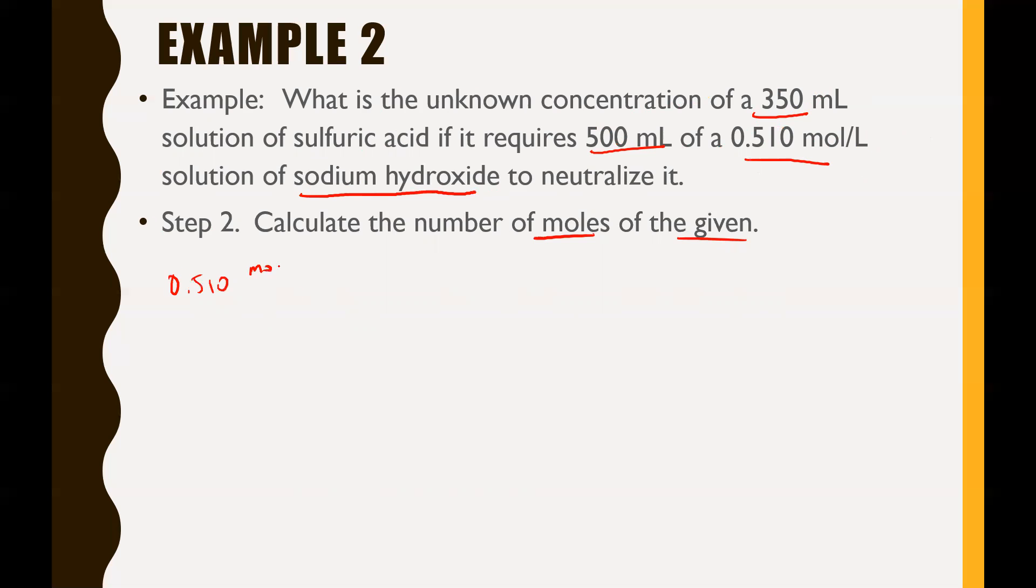0.510 mol/L equals some number of moles N over some number of liters, which is 0.500 L. Multiply that over to the other side and you're going to see that N equals 0.255 moles. Keep in mind that that's for your NaOH, your sodium hydroxide.